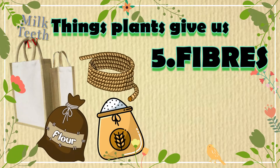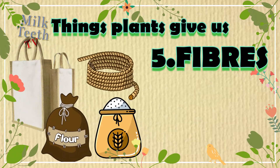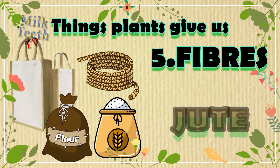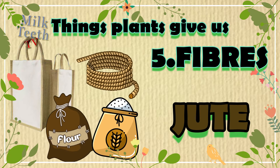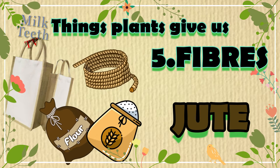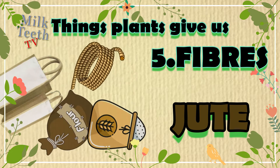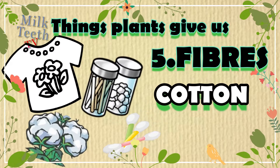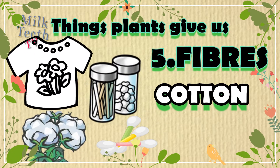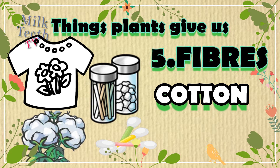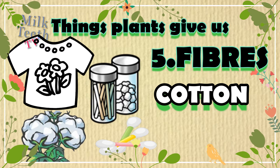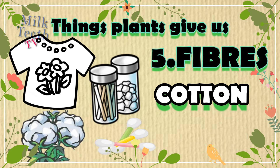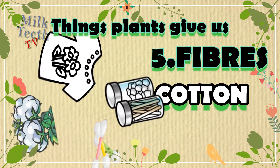Number five: fibers. We get fibers like jute, used to make bags, sacks, and ropes, and also cotton, which is used to make clothes, cotton buds, and cotton balls used in first aid.